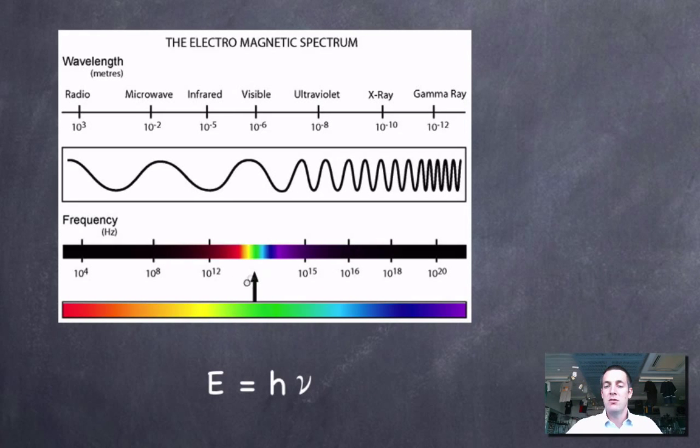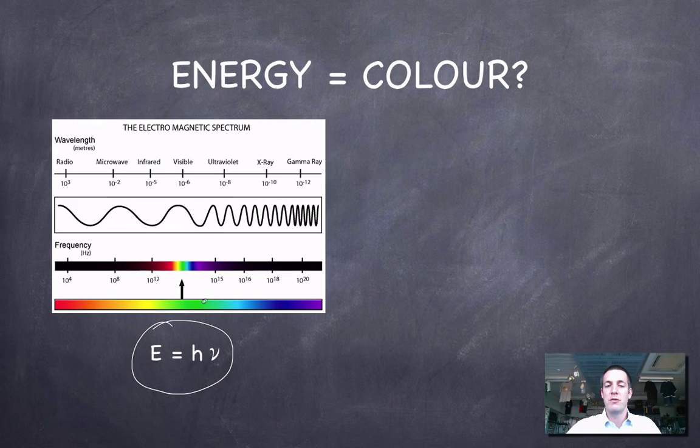So in other words, the color of light that a complex will absorb depends on the energy gap between its orbitals. And remember, there is this relationship between the frequency of light and the energy of it, and that is that the energy of a photon is equal to Planck's constant times the frequency of the light. Which isn't an important formula to be able to use, but it is important to realize that the frequency of light is related to the energy, and therefore the color of the light is related to the energy.